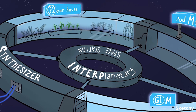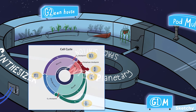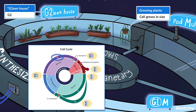The final part of interphase is G2, also called the second gap or growth stage. And what better place to illustrate that than by this greenhouse — check out these growing plants. In G2, a cell continues to grow in size while preparing for mitosis and cell division.